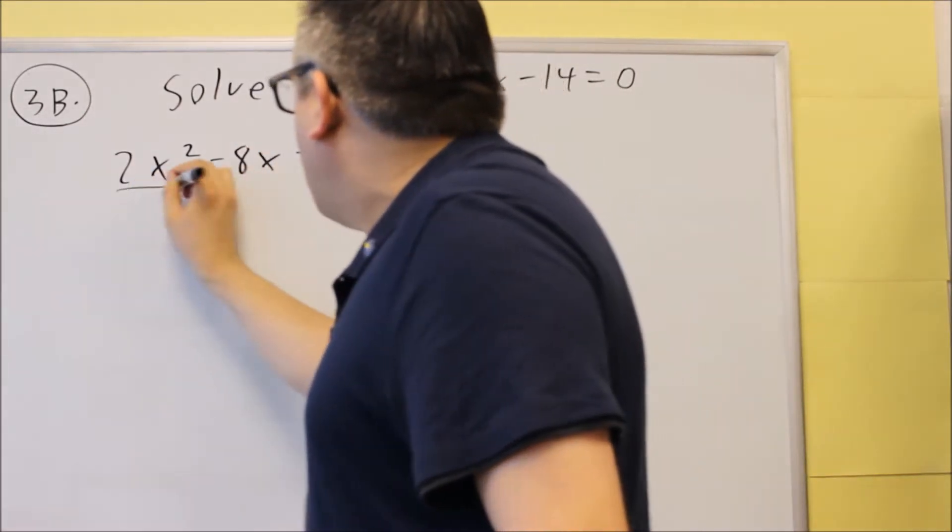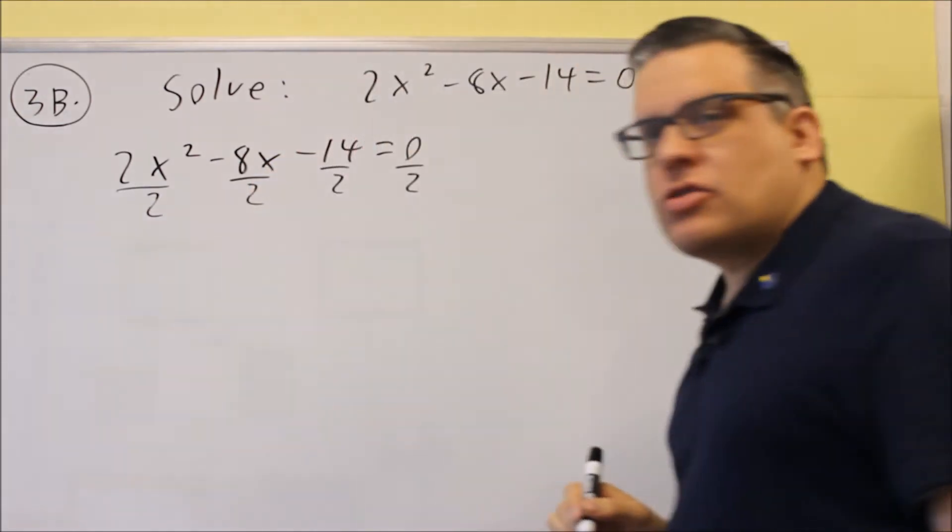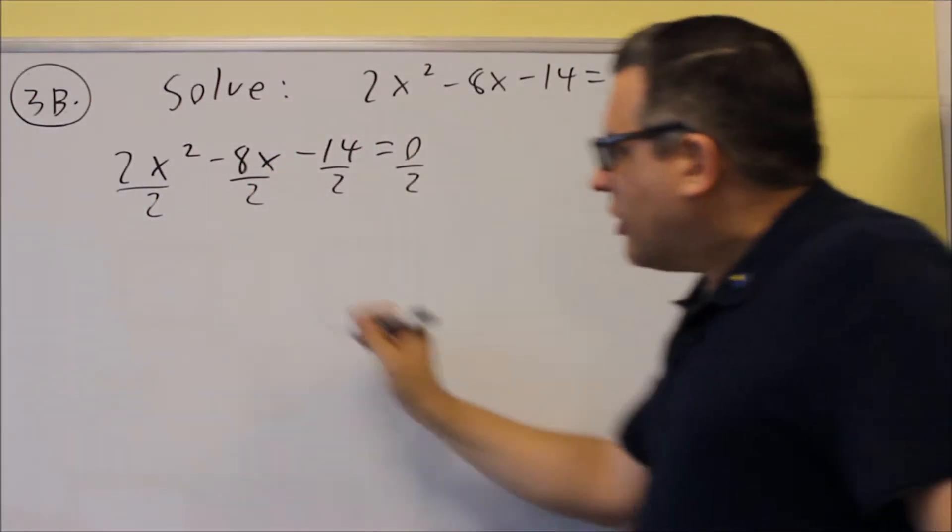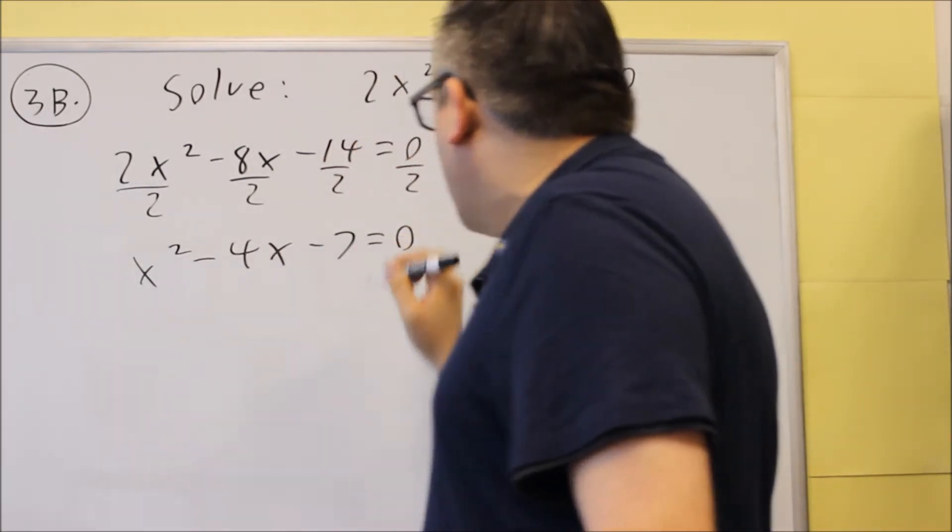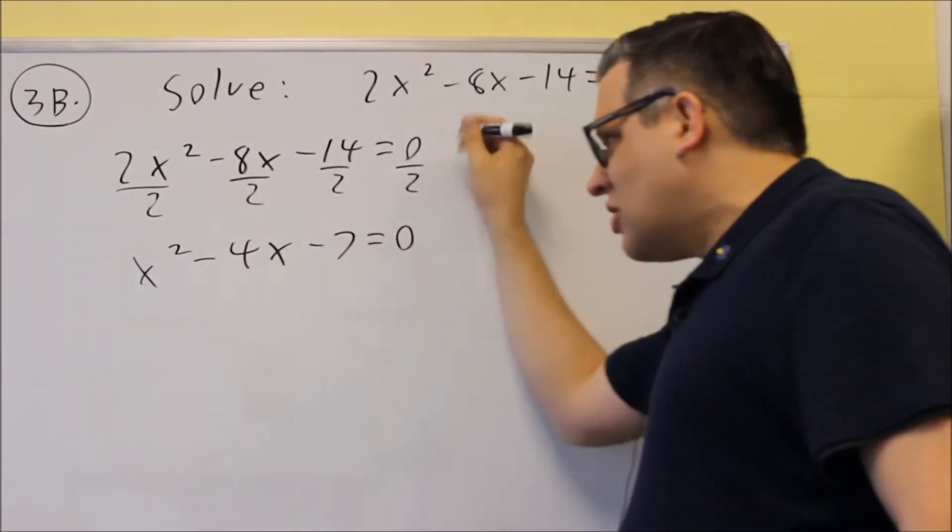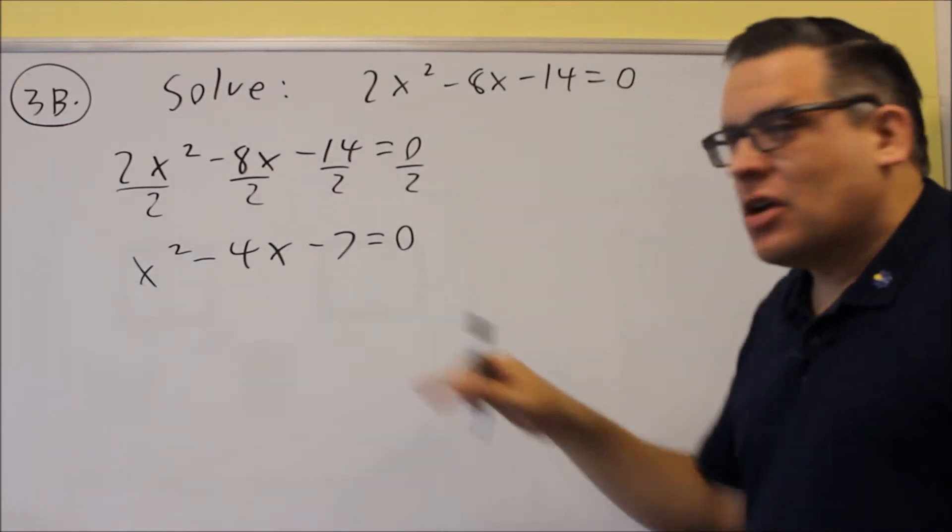and I'm just going to divide everything by 2 all the way across. That way I'll get smaller numbers to deal with. So let's divide the whole thing by 2. Now we have this.